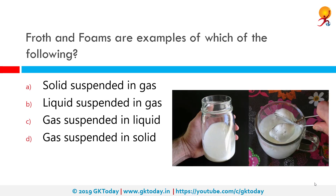Froth and foams are examples of which of the following? The correct answer is gas suspended in liquid. Froth is a bubbly substance that usually forms on the surface of a liquid — for example, when you boil milk for too long. It can also be called foam; however, foam can be other things as well. For example, rubber foam is a sponge-like material used to fill sofas and pillows.